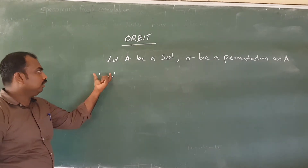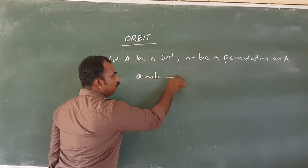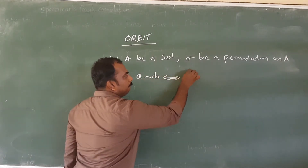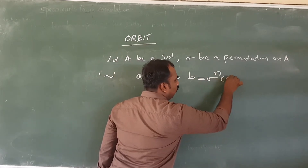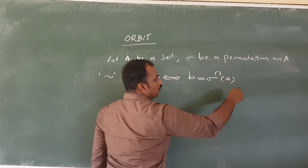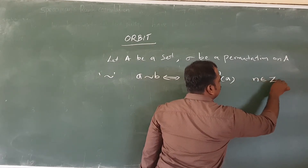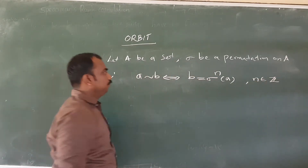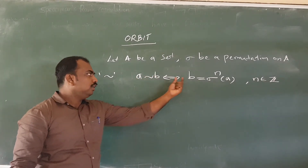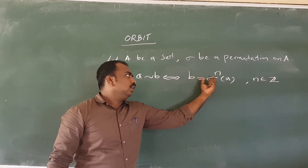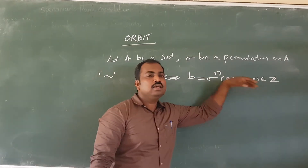I will denote the relation here as delta. A delta B if and only if B is equal to sigma raised to n of A, where n belongs to Z. So A is related to B means B can be written as sigma raised to n of A. M is an integer.